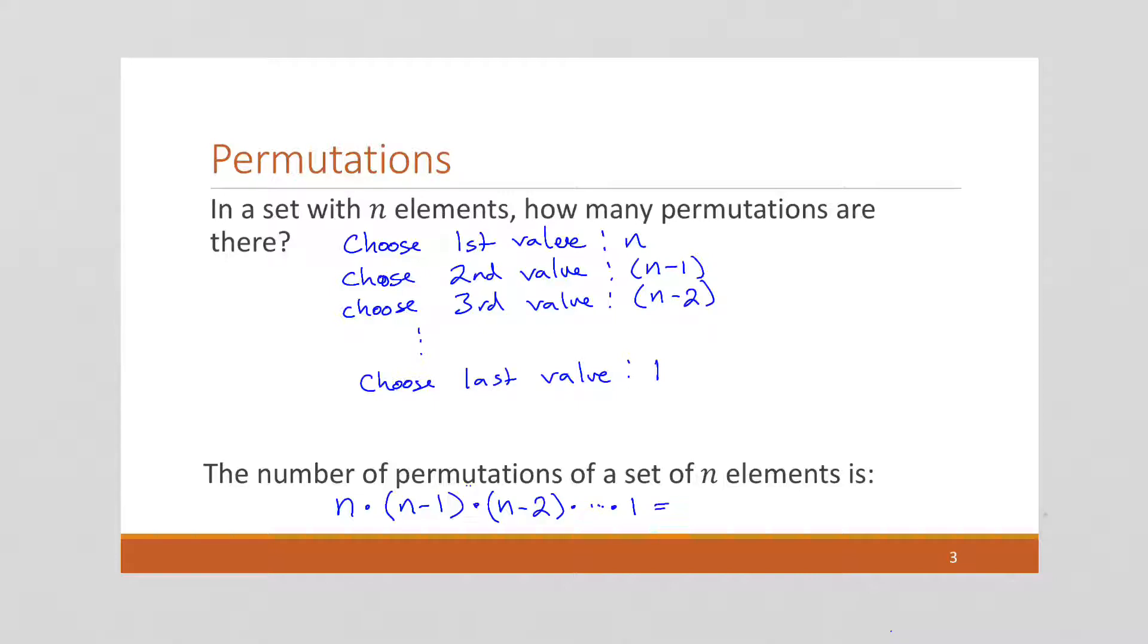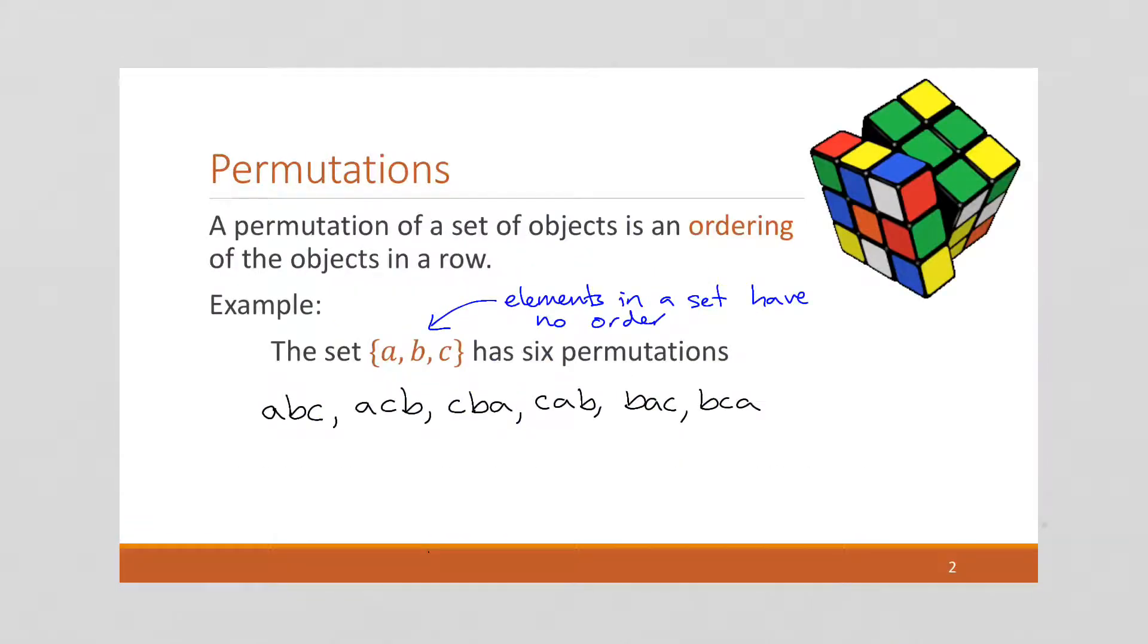And if you recall, this has a name. This is called N factorial. So there are N factorial different number of permutations in a set of N elements. And we can go back to this previous page to confirm it. We had three elements and three factorial is three times two times one. Three times two is six times one is six. So that matches. We have six permutations of that set.